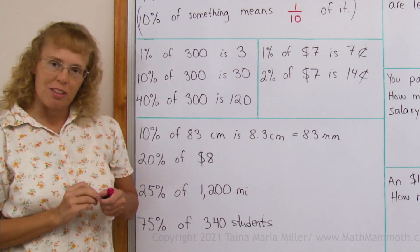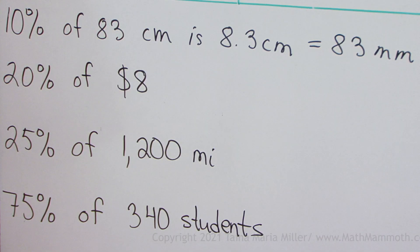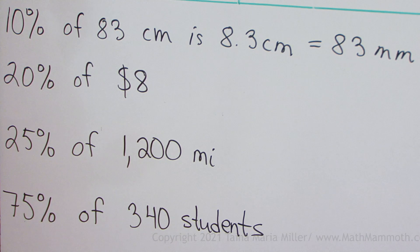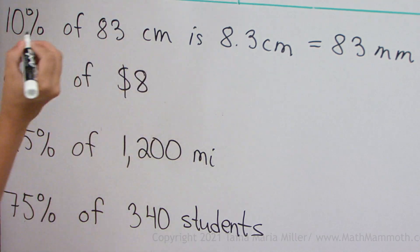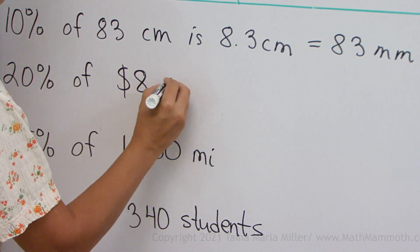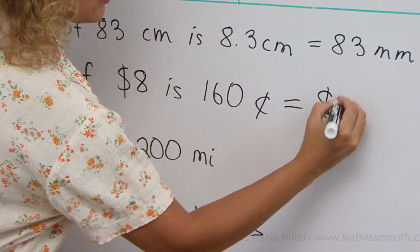Which is also eighty-three millimeters. Twenty percent of eight dollars. Think first of ten percent of eight dollars. One-tenth of it would be eighty cents. Then double that, so we get one hundred sixty cents, or one dollar sixty.